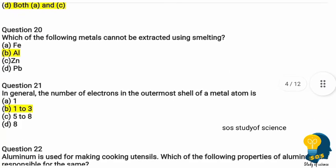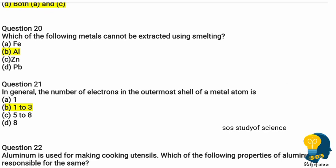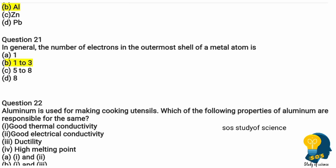Question twenty: which of the following metals cannot be extracted using smelting? Smelting is the extraction of metals from ore by a process involving heating and melting. Options are iron, aluminium, zinc, and lead. The correct answer is option B, aluminium — aluminium cannot be extracted by smelting.